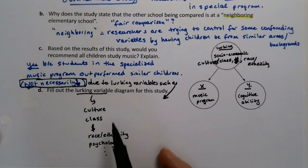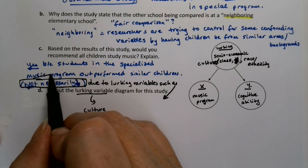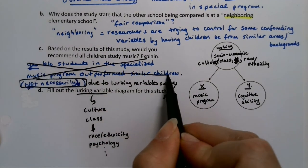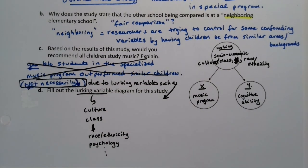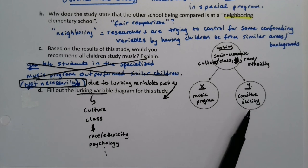With that many lurking variables, we should put a big X through our original idea. We thought the music program was causing better performance, but there could be a lot of reasons why that's happening — it might not necessarily be the music program. I'm a fan of music, so I have no problem with letting children join music programs, but necessarily raising their cognitive ability may not be what's actually happening there. That's the point.